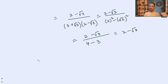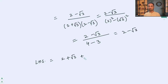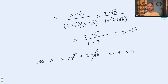Now let's add the two values. The left-hand side is tan 75° + cot 75° = (2 + √3) + (2 − √3). The +√3 and −√3 cancel, giving us 4, which is the right-hand side. I hope you find this video helpful, and I'll see you in the next one.